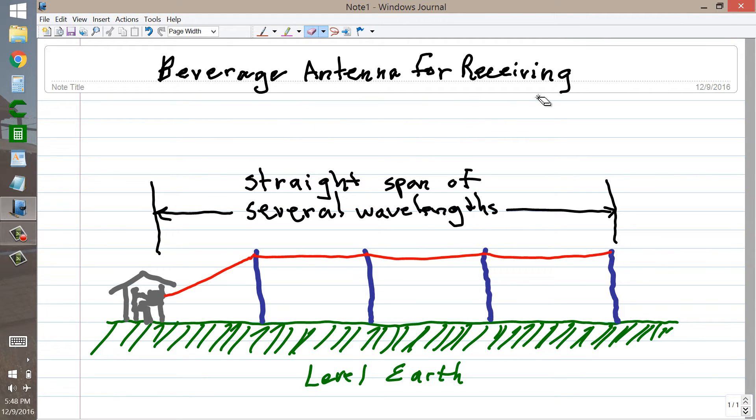At your service here to describe another type of HF or high frequency antenna, this one particularly designed for reception. It resembles a long wire antenna, and it should be straight, and it should be at least several wavelengths long coming out from your station.